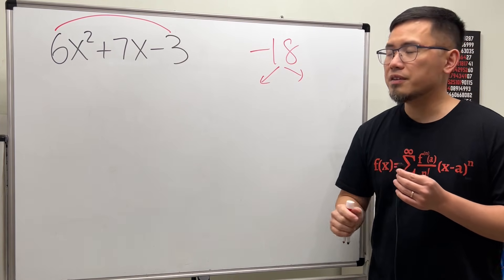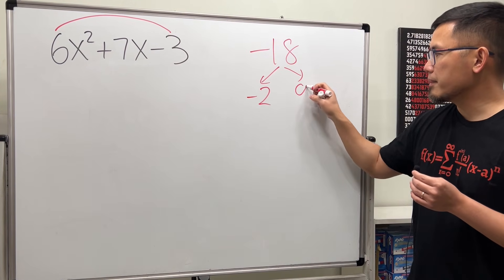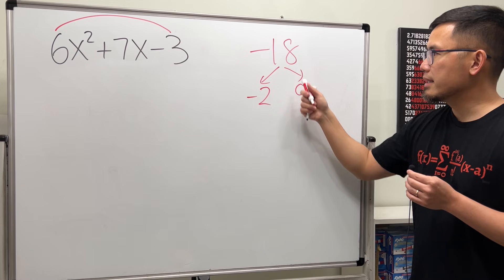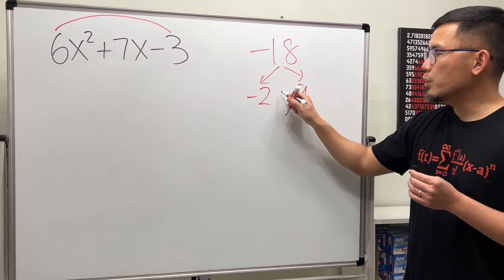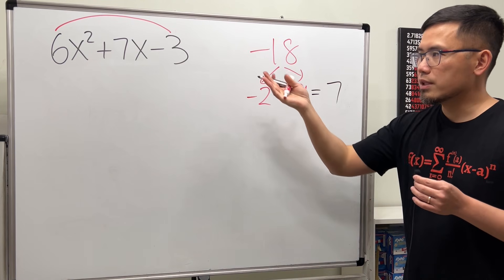But if one of the numbers is negative, write it down first. So I'll put down negative 2 and 9. We multiply, get negative 18, and when we add them, we get 7. This will allow us to do the following.